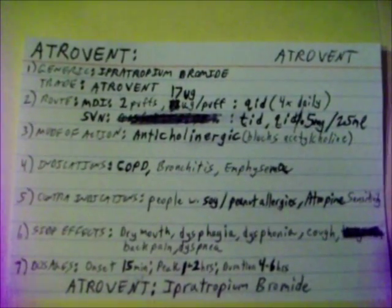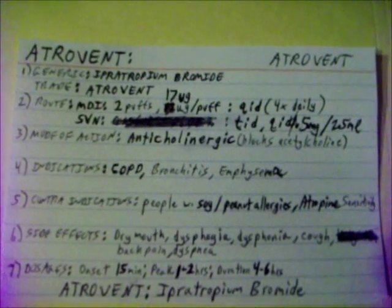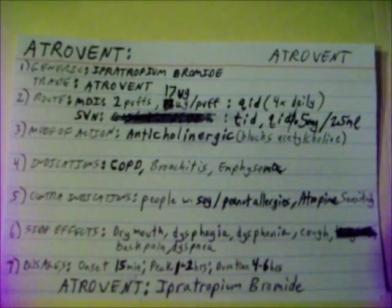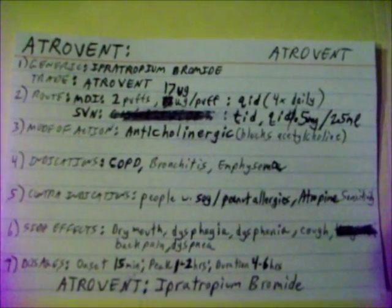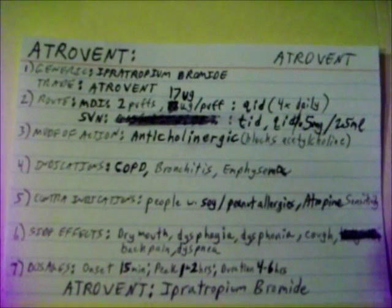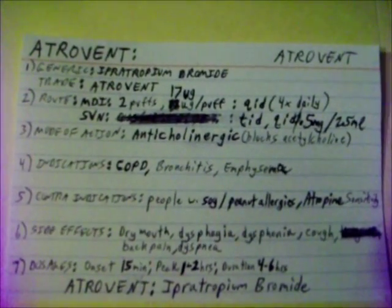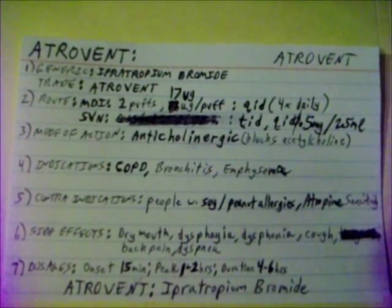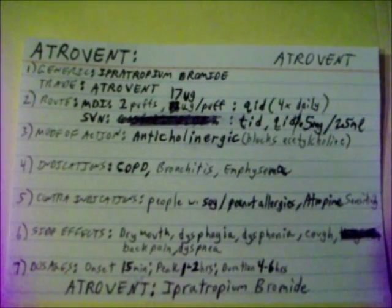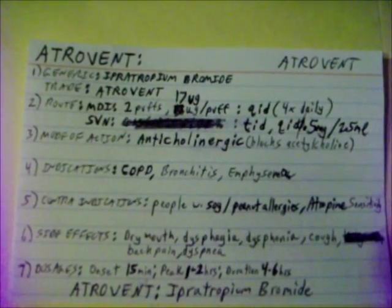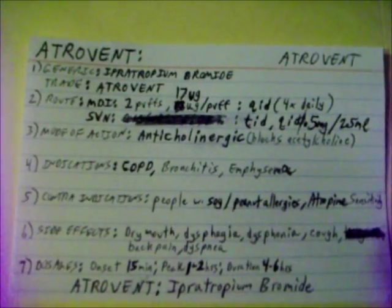Atrovent. Generic name: ipratropium bromide. Trade name: Atrovent. Given as a metered dose inhaler, 2 puffs of 17 micrograms per puff, QID — 4 times daily.